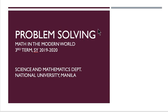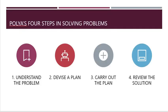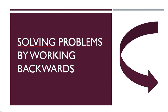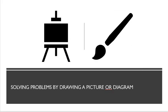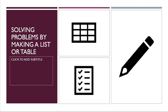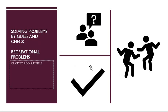Hello everyone and welcome to the last session of our discussion of problem solving, a topic in mathematics in the modern world. During the first session we discussed Paul Polya's four steps in solving problems. The second session we discussed solving problems by working backwards. The third session, looking for a pattern. The fourth session, drawing a picture or diagram. Last session, making a list or table. Our last set will be on solving problems by guessing and checking, and we'll solve some recreational problems as well.